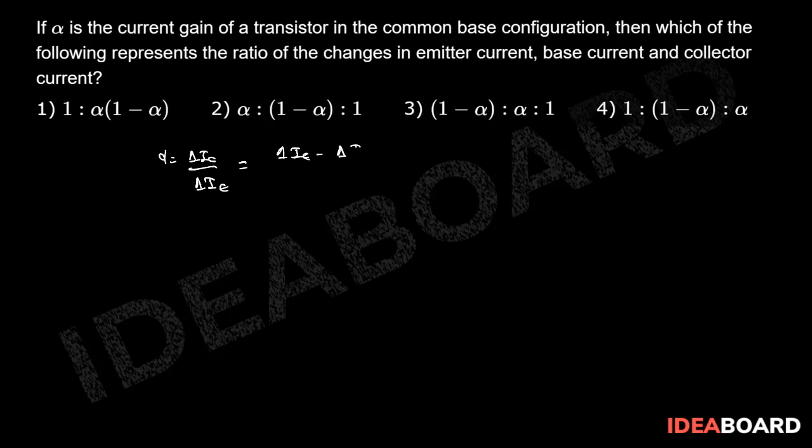So that can be written as 1 minus Delta I B divided by Delta I E. So Delta I B by Delta I E can be written as 1 minus alpha.